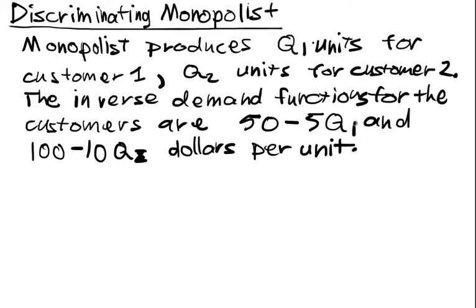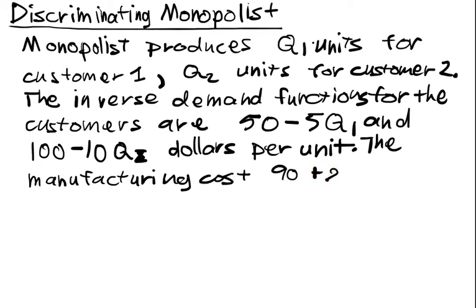And the manufacturing cost we assume is 90 plus 20 times Q1 plus Q2. So we have a fixed cost of 90, and then to produce each unit it costs 20.